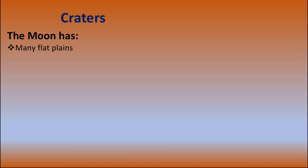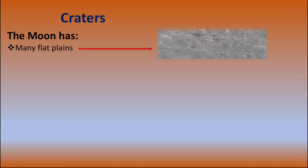Now, what are craters? The moon has many flat planes. The moon is a dusty ball of rock, so there are so many features on its surface. The surface of the moon is home to mountains, huge craters, and flat planes. You can see this is the surface of the moon.